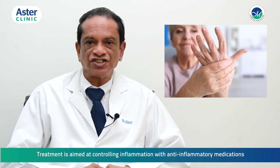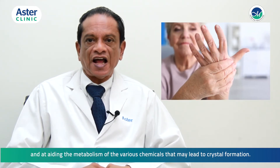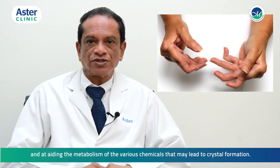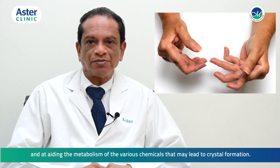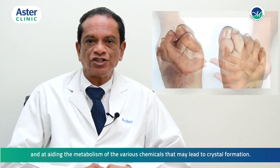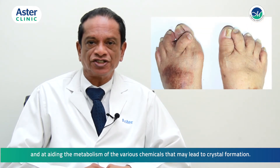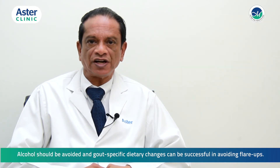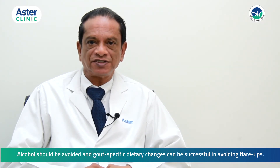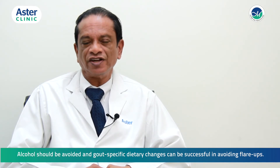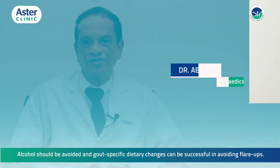Treatment is aimed at controlling inflammation with anti-inflammatory medications and at aiding metabolism of the various chemicals that may lead to crystal formation. Alcohol should be avoided, and gout-specific dietary changes are successful in avoiding flare-ups.